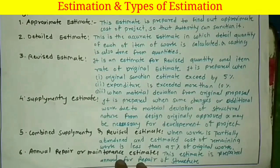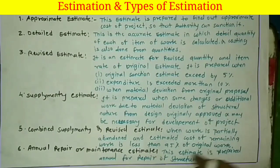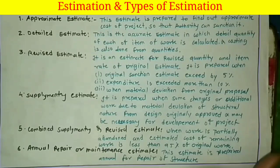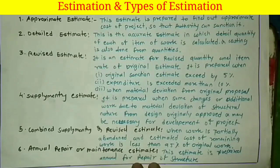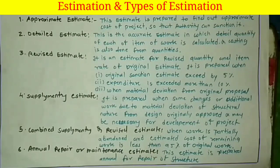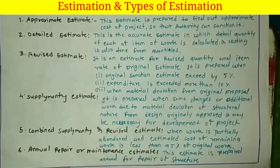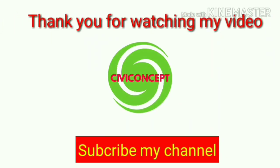The sixth type is the annual repair and maintenance estimate. This estimate is prepared for the annual repair of any kind of building. For any repairing work, we also require an estimate. So this is the annual repair and maintenance estimate. Thank you for watching my video — please subscribe to my channel CiviConcept.